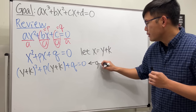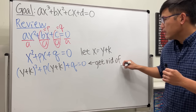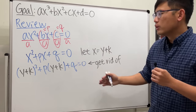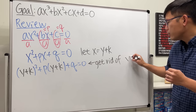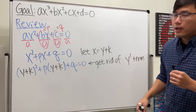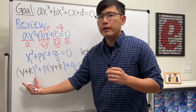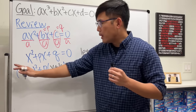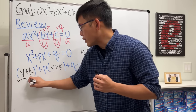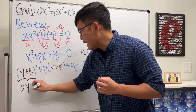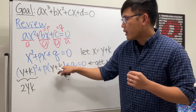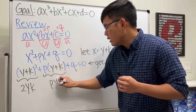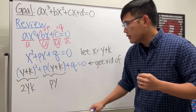The goal right here is that we want to get rid of the x to the first power — but since I used a change of variable, right here we want to get rid of the y to the first power term. What y¹ terms are we going to get? We don't care about y²; we don't care about k². We care about the middle term, which is just 2yk, and from the p term we just care about p·y.